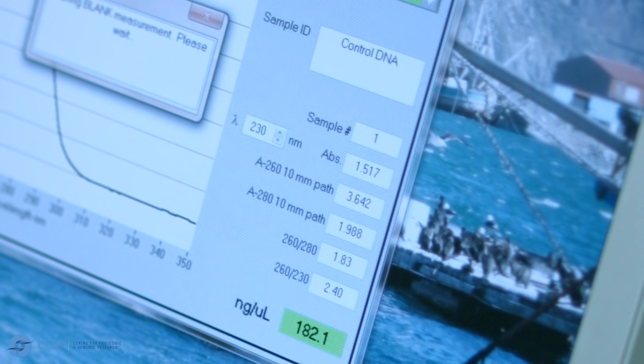When reviewing the results, we can see that one of the samples hasn't performed optimally, while the other one has. If the sample was to be used for the genotyping assay we will be carrying out, it would require an ethanol precipitation step to purify that sample.